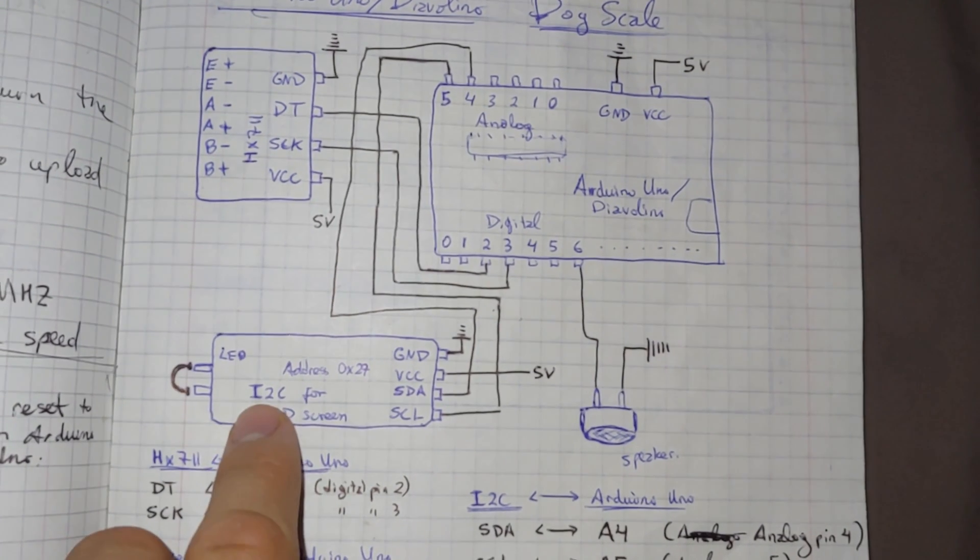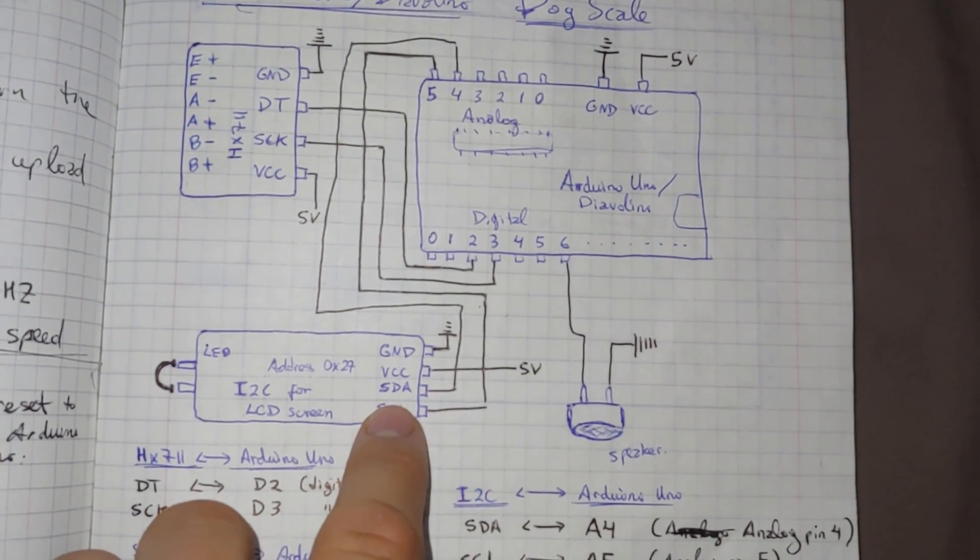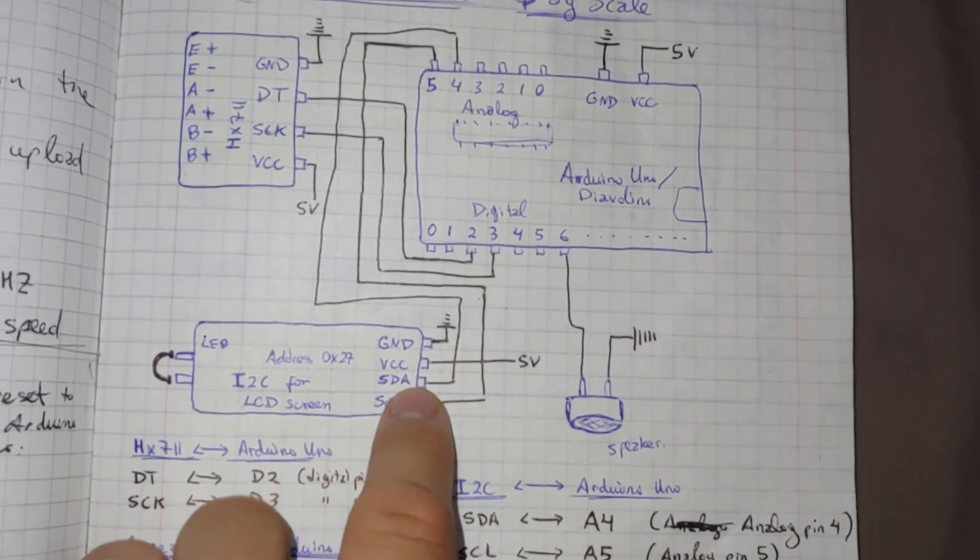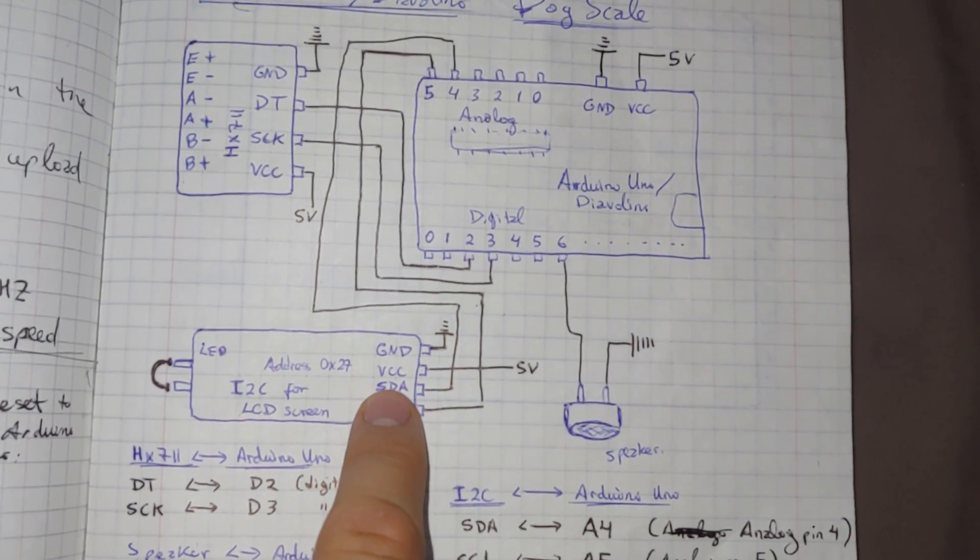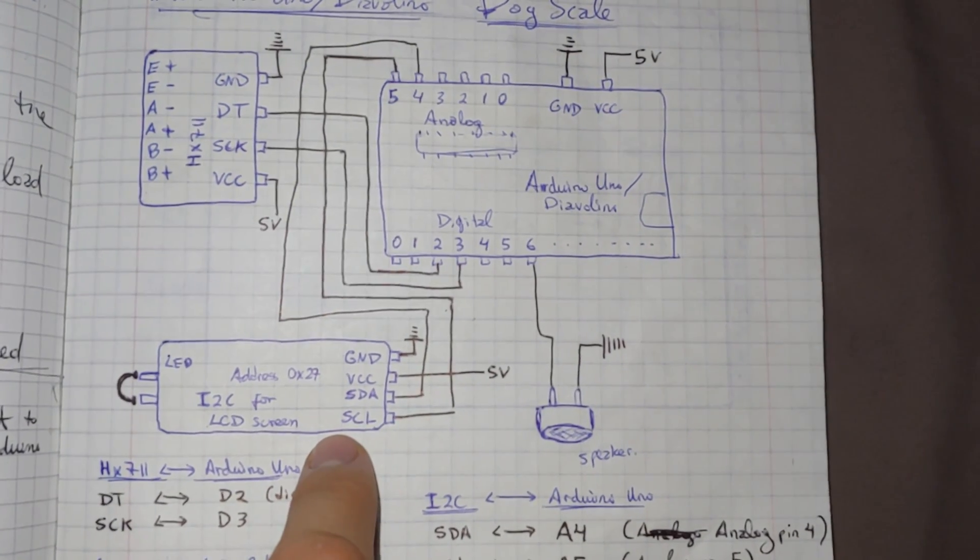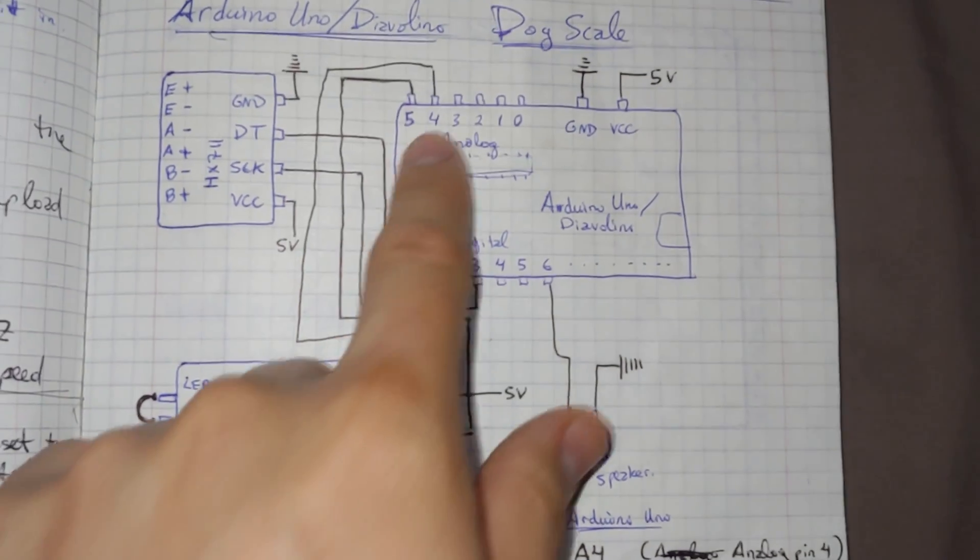Then, to connect to the I2C module, we'll take the SDA pin in the I2C module, and connect it to analog pin 4. Then the pin SCL will go to analog pin 5, over here.